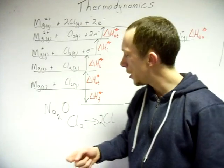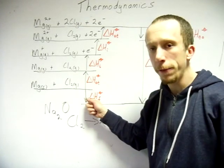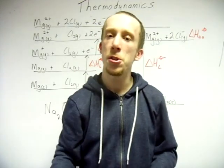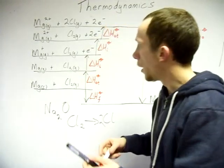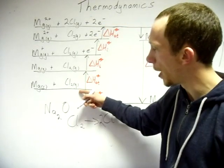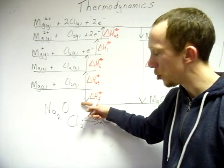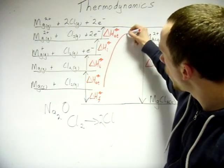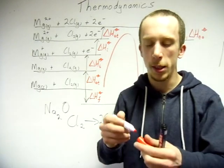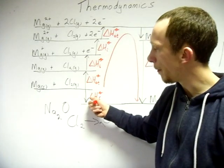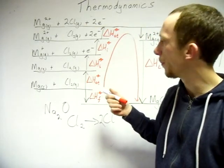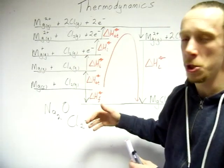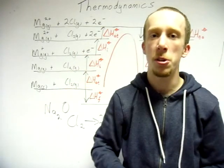The easiest way to work these out: the enthalpy of formation equals everything else added together, because Hess's Law applies to Born-Haber cycles. You should be able to see two clear routes around the cycle — you can drop straight down to the product, or take the long route all the way around. So enthalpy of formation equals everything else added together, and if you know everything except one value, you just rearrange and subtract.